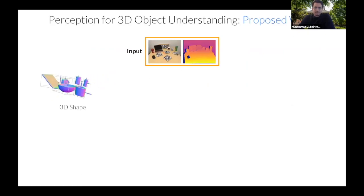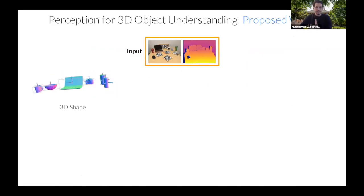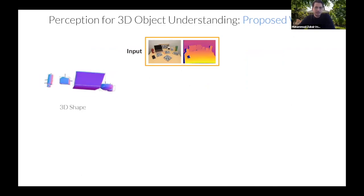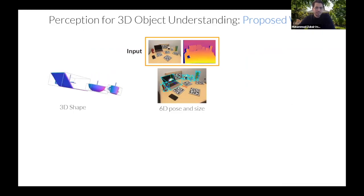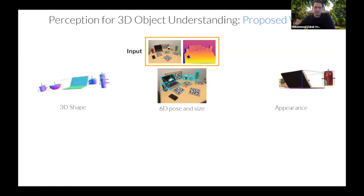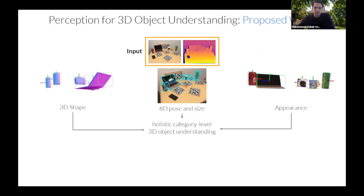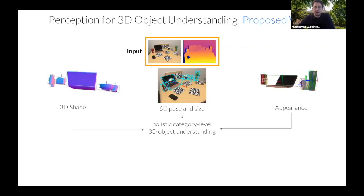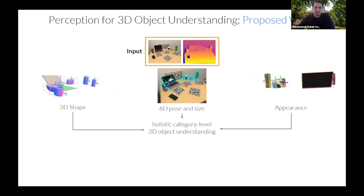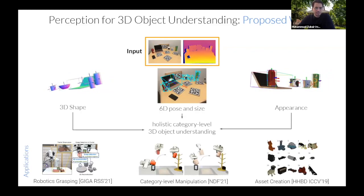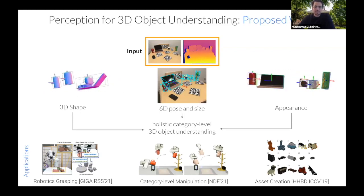For autonomous systems, the first step is understanding the 3D world around us. The task in the first work is: given a single input RGBD observation, reconstruct the 3D shapes of all objects in the image, predict all 6D poses and sizes, as well as the appearances of all objects. We call this category-level holistic 3D object understanding, since we don't have access to prior CAD models at inference time. Applications include robotics grasping, category-level manipulation, and asset creation.